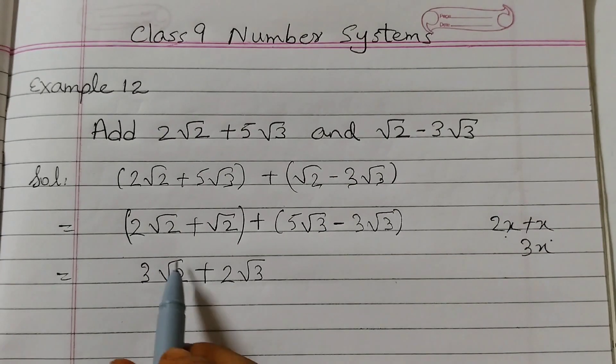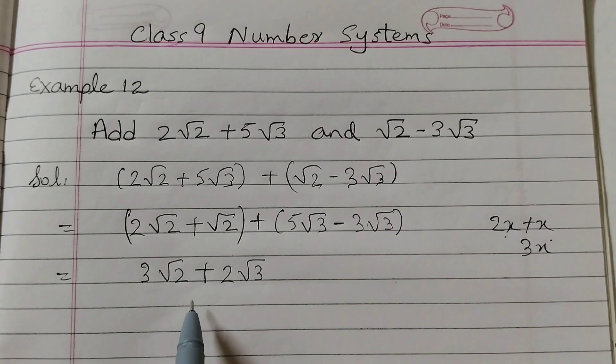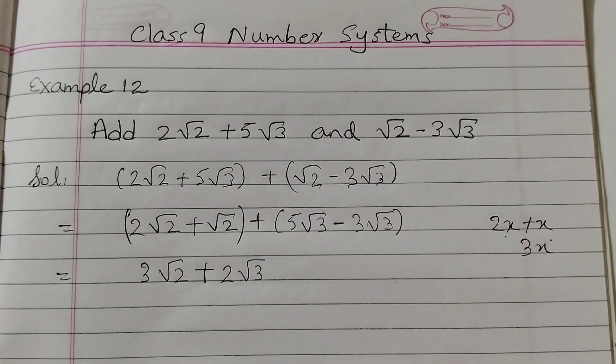Because this has √2 and this has √3, so these are unlike terms—we cannot add these. Hope this is clear to all. Thank you.